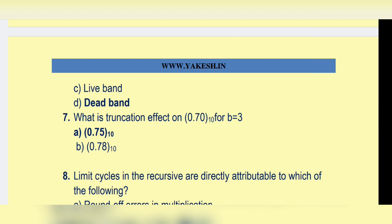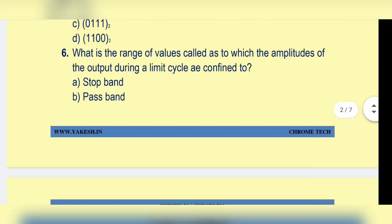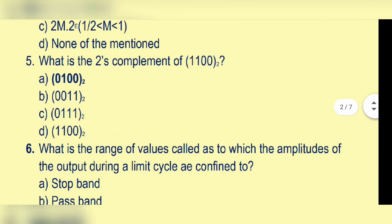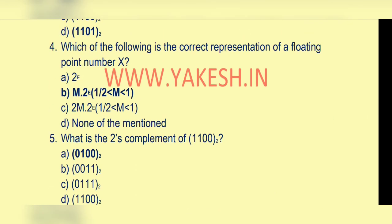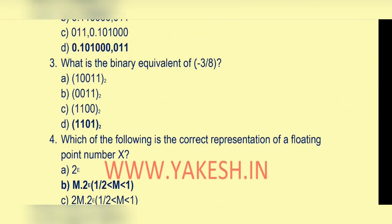Truncation of 0.70 base 10 for b equal to 3 — option a: 0.75 base 10. Range of values called amplitude of output during limit cycle is option d: dead band. Two's complement of 1100 base 2 — option a: 0100 base 2. Floating point representation option b: m, 1/2 ≤ m < 1. Binary equivalent of minus 3/8 — option d: 1101 base 2.